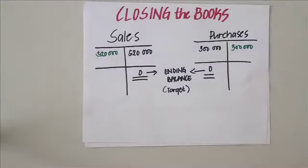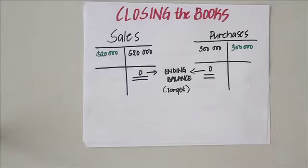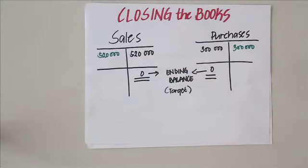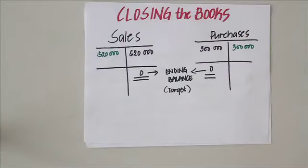Let me use a trial balance to illustrate what happens. We have here two T-accounts, namely for sales and purchases. When you close the balance you simply reduce the account balances to zero. To close the balance for sales, you want to get an ending balance of zero by making a debit of five hundred twenty thousand.